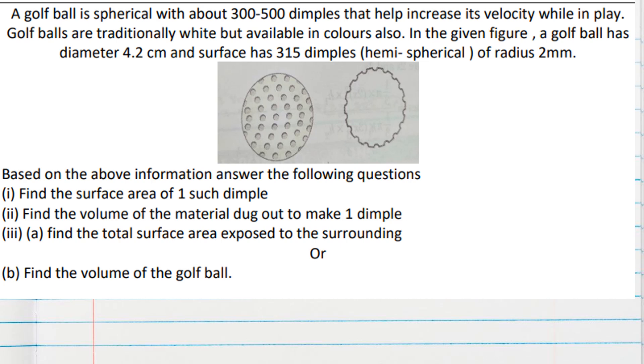Now for the second question, volume of the material dug out to make one dimple. Volume of the material means volume of the hemisphere to make one dimple. So volume of hemisphere only we have to find. Volume of the material means volume of the hemisphere. That is the second question.